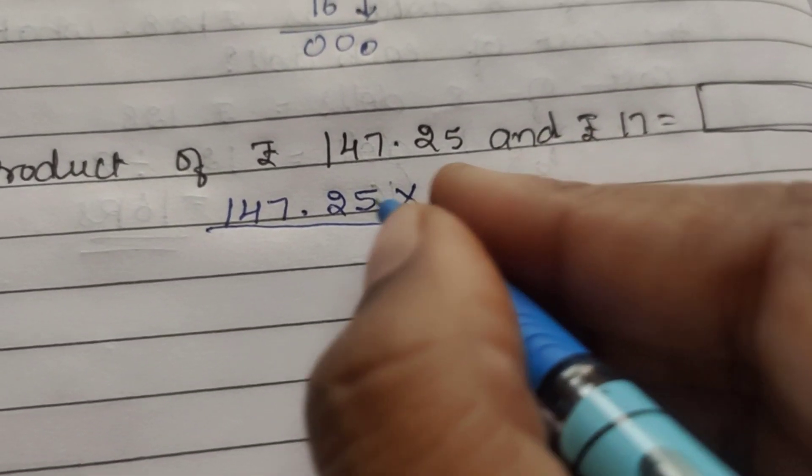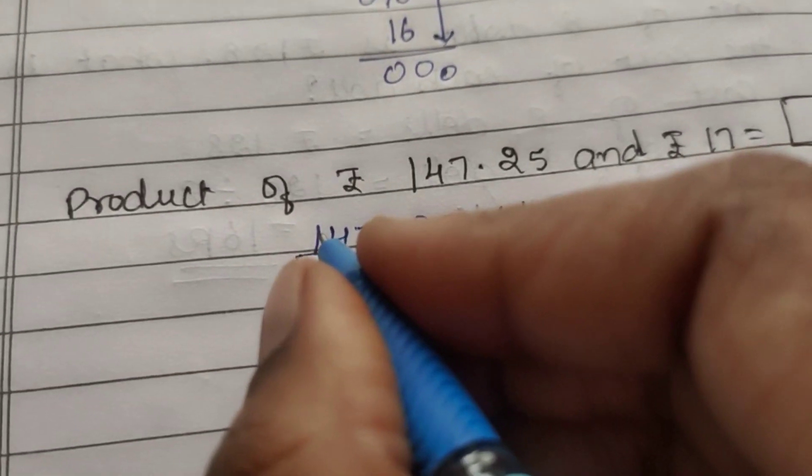Third question. Product of rupees 147.25 and 17. So 147.25 into 17. First multiply by 7. 7 times 5 is 35, so 5, carry 3. 7 times 2 is 14, 14 plus 3 is 17. So 7, carry 1. 7 times 7 is 49, 49 plus 1 is 50. So 0, carry 5. 7 times 4 is 28, 28 plus 5 is 33. So 3, carry 3. 7 times 1 is 7, 7 plus 3 is 10.